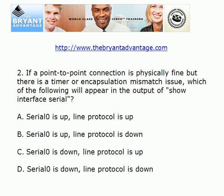You might see this in a production network as well as certainly a home lab or a test question. If a point-to-point connection is physically fine but there is a timer or some kind of encapsulation mismatch, which of these four should you expect to see when you run the show interface serial command?